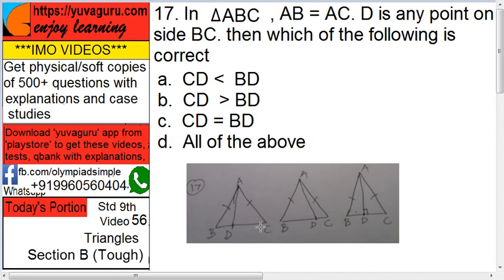So which of the following can be correct? Let's see option A: CD less than BD. Is it possible? This one, second figure. D is somewhere near C. Then CD less than BD. This is possible.